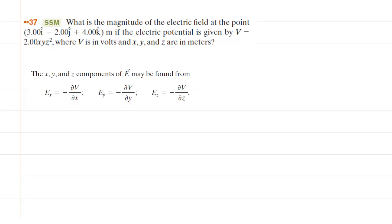In order to find the magnitude of the electric field at the given point, what we actually need to do is find the individual components of the electric field, the x, y, and z components. Once we have the three components of the electric field, we can find its overall magnitude.